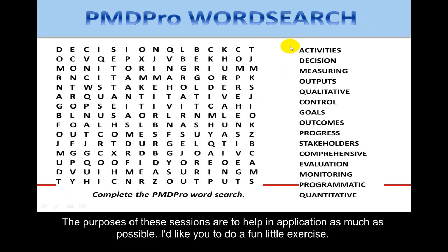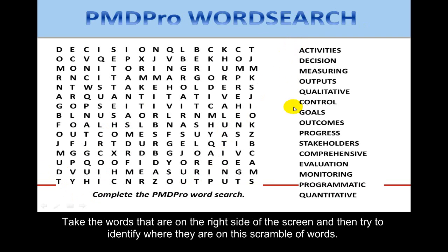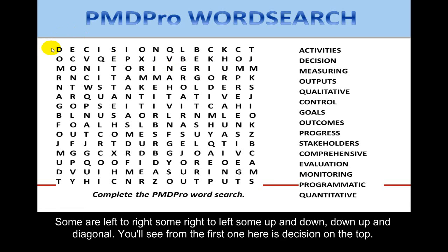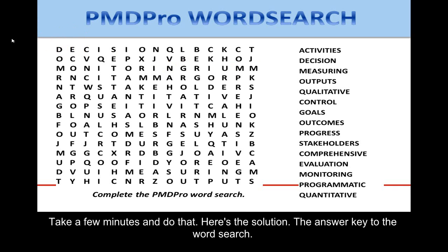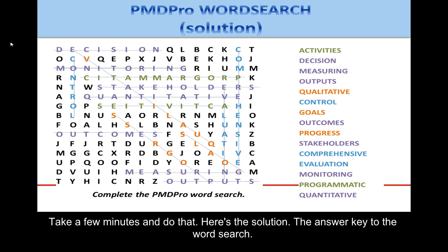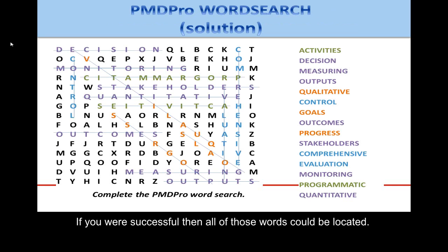To start out today, I'd like you to do a fun little exercise. Take the words on the right side of the screen and try to identify where they are in this scramble of words. Some are left to right, some right to left, some up and down, down and up, and diagonal. Here's the solution — the answer key to the word search.